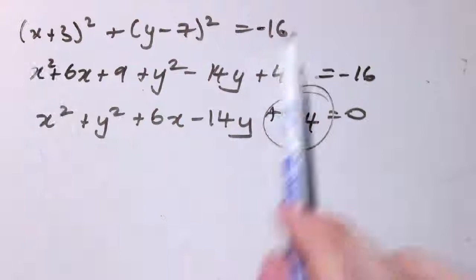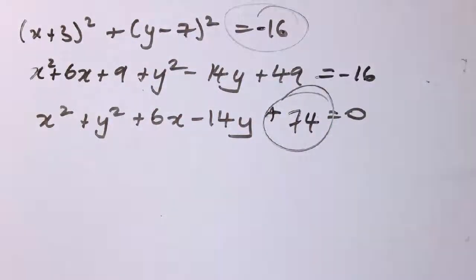And that doesn't work. So this would have to go through minus 3, 7, have to go through minus 3, 7. But this has got to be a positive number.